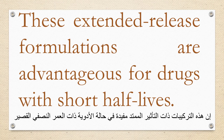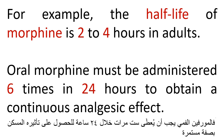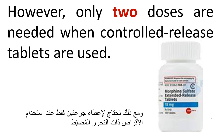These extended release formulations are advantageous for drugs with short half-lives. For example, the half-life of morphine is two to four hours in adults. Oral morphine must be administered six times in 24 hours to obtain a continuous analgesic effect; however, only two doses are needed when controlled release tablets are used.